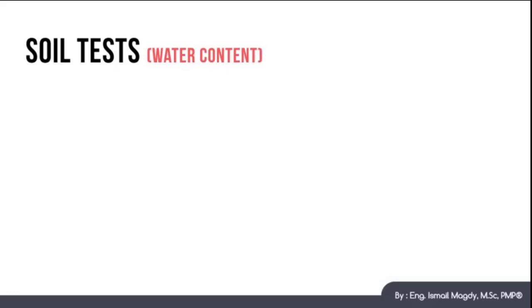The first test we are going to discuss today is called water content test, and it is a laboratory test that we carry out to determine the percentage of the water inside the soil. The steps of the water content test are as following. First step, we bring a container and we weigh it empty, and we will consider the weight of the empty container to be W1.